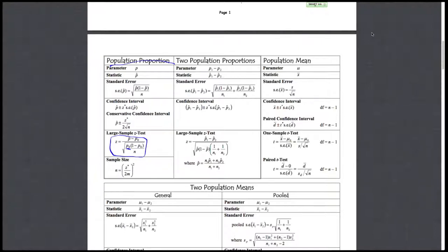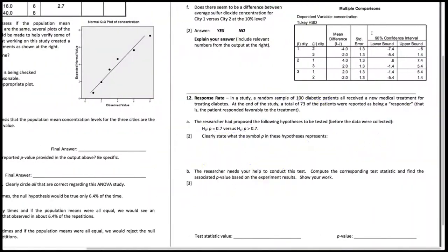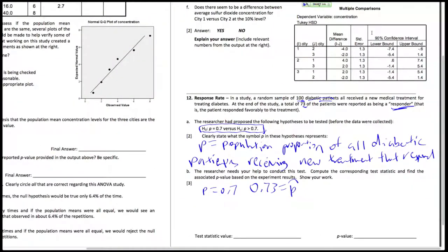Note that you use the null for the standard deviation because we're assuming that the null is true. And clearly, N times P and N times 1 minus P are both more than or equal to 10 in this case. So it's just going to be 0.73 minus 0.7 over square root of 0.7 times 1 minus 0.7 over 100. It gives us a z-value of 0.6546. So that's our test statistic value.